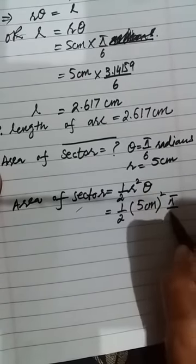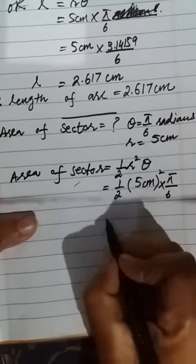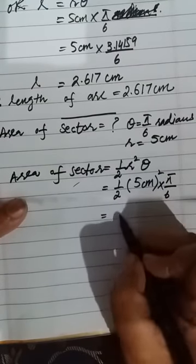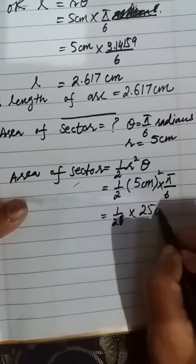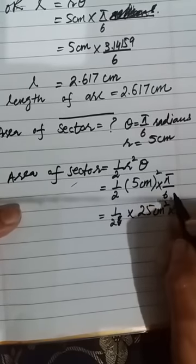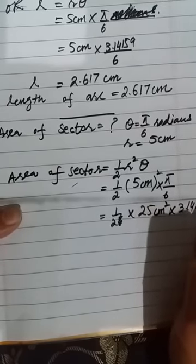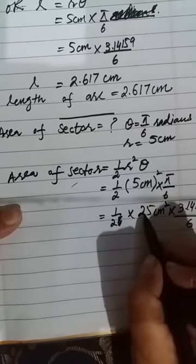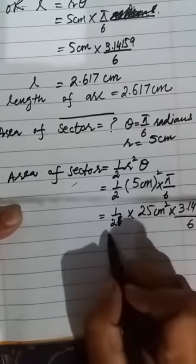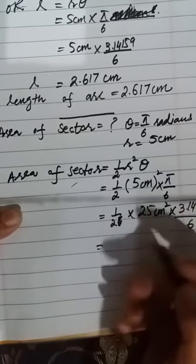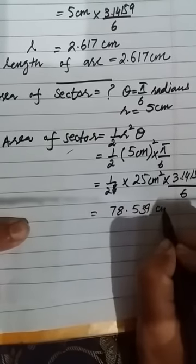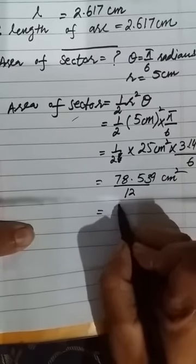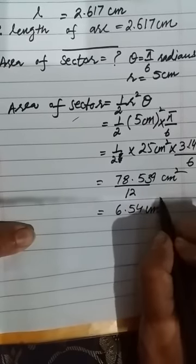By putting the values of r as 5 centimeters and theta as pi by 6 radians: the square of 5 is 25 centimeters squared, and the value of pi is 3.14159. Multiplying 25 with 3.14159 gives 78.539 centimeters squared, then dividing by 12 we get the area as 6.14 centimeters squared.